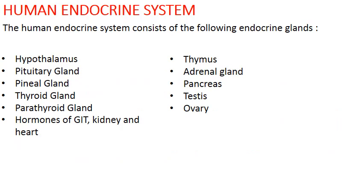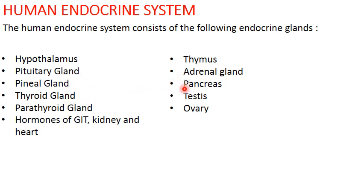The human endocrine system consists of the following endocrine glands: the hypothalamus, thymus, pituitary, adrenals, pineal, thyroid, parathyroid, pancreas, testes, ovaries, hormones of the gastrointestinal tract (GIT), kidney, and the heart.